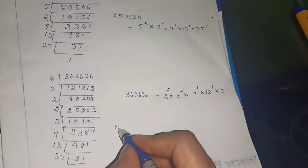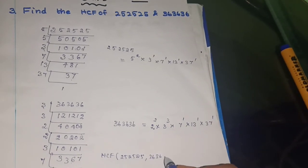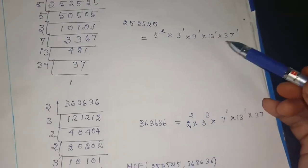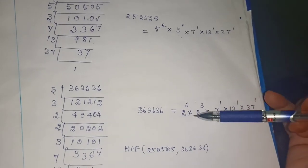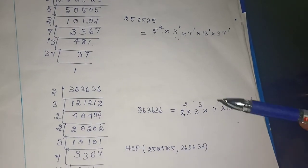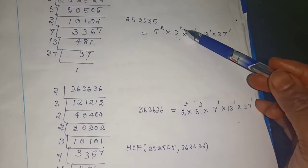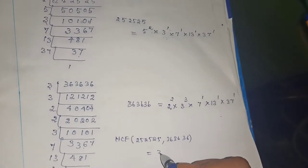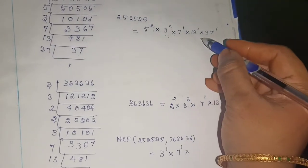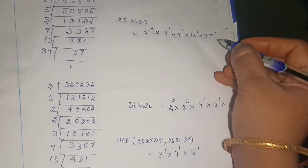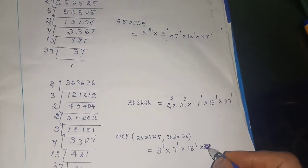Now to find the HCF of 252525 and 363636. How will you find HCF? Only the common ones - common numbers alone you should take. We expressed them in powers. Which is the lowest power? That will be the common factor. 5 is not at all in 363636, so no common factor of 5 - leave 5. 3 is there: 3 to the power 1 here, and 3 to the power 3 here. Only 1 three is common, so write 3 to the power 1. Next, 7 to the power 1 is there in both. So 7 to the power 1 into 13 to the power 1 - 13 to the power 1 is in both, so write it once. Next is 37 to the power 1 - 37 to the power 1 is in both.